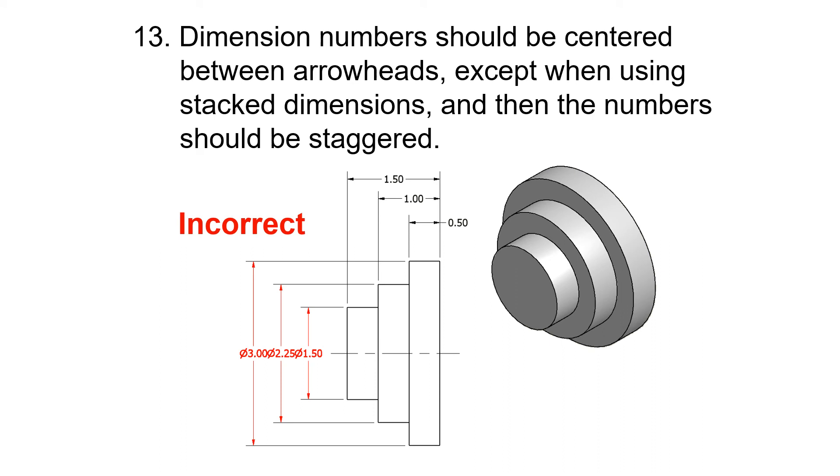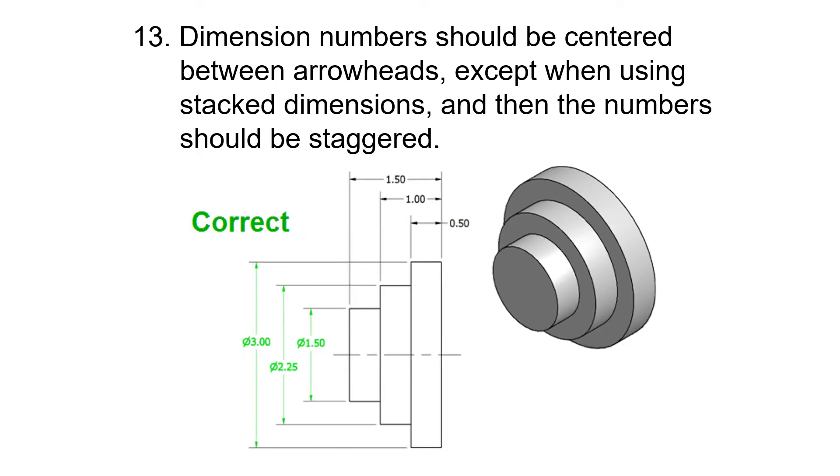Dimension numbers should be centered between arrowheads, like this, except when using stacked dimensions. Then the numbers should be staggered. Look how messy that looks. Even though they're in between, directly in the middle, that's good, but it's not good because that makes it look messy. If you need to, you can go like that. And then if there's no room in between, sometimes you'll see it off to the side like that, but that's only if there's no room to put your dimension.